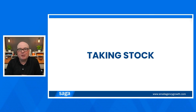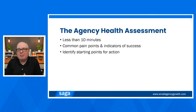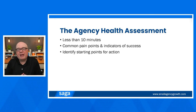We'll start with taking stock using the rearview mirror — thinking about how 2023 went and what that means for the next 12 months. We recently released the Agency Health Assessment at SAGA: a simple 31-question survey that helps you examine the key elements of your business. It focuses on key indicators of success and critical pain points. It takes about 10 minutes or less and is a free download on the SAGA website.